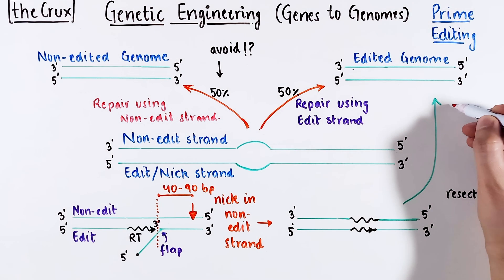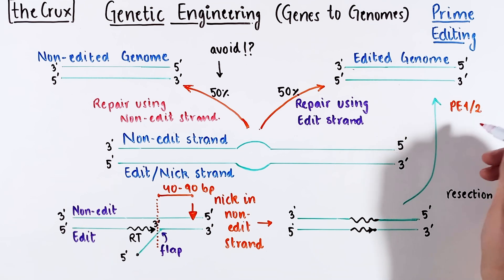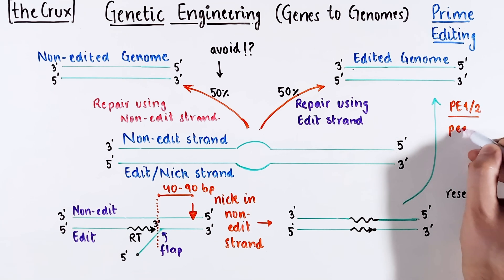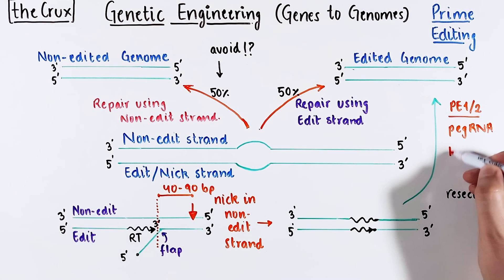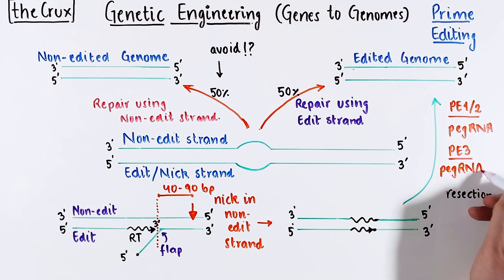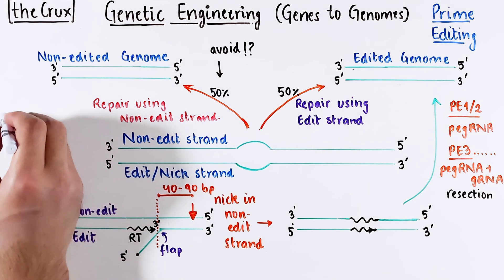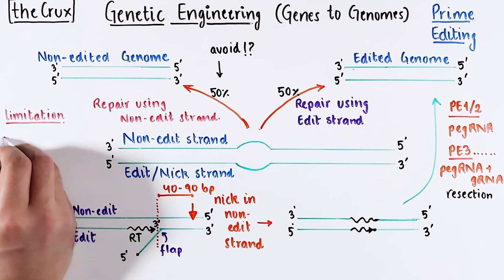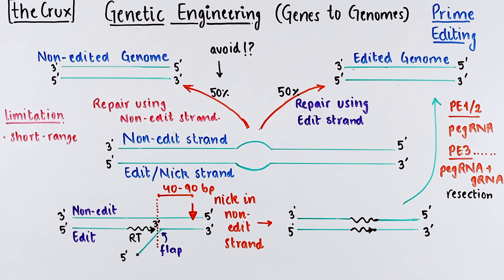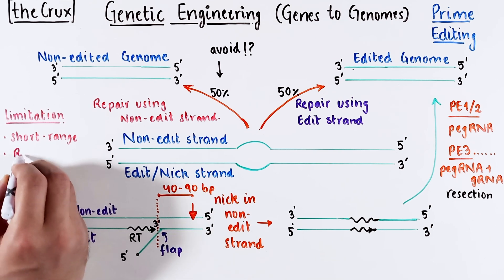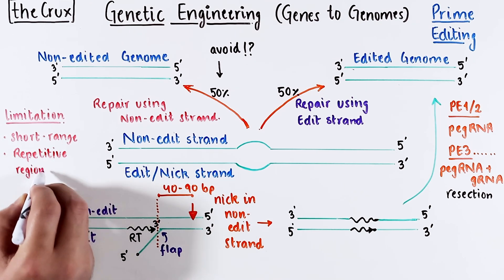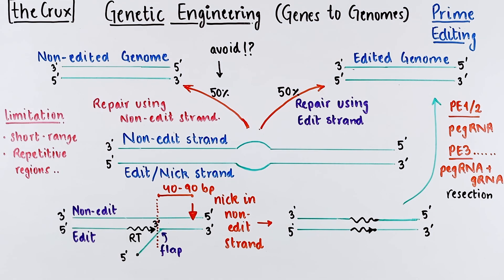There are many iterations of prime editors with a handful of changes. In the first two versions, only PEG RNA was used, so the outcome from the mismatch bubble was left purely to chance. In version 3 editors, the nicking guide RNA was introduced to start nick repair and increase prime editing efficiency. In summary, the applications allow you to go between purines and pyrimidines and even create short insertions and deletions. The limitation is that vanilla prime editing is meant for short-range edits, since the RT template is typically less than 100 bases, making repetitive regions very inefficient to edit.